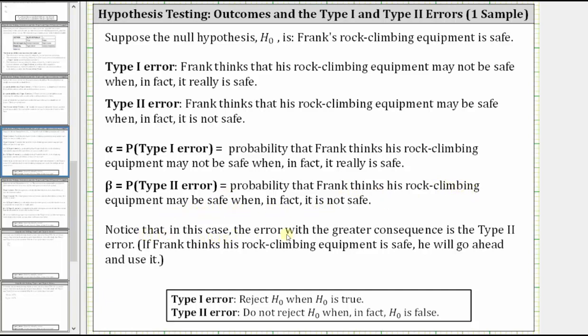Notice in this case, the error with the greater consequence is the type two error. If Frank thinks his rock climbing equipment is safe, he will go ahead and use it when in fact it is not safe, which may put him in danger.